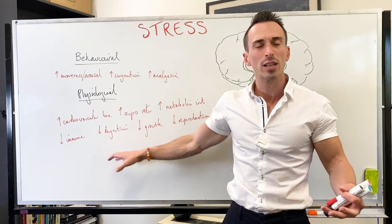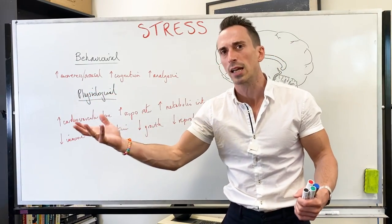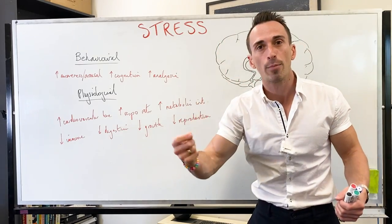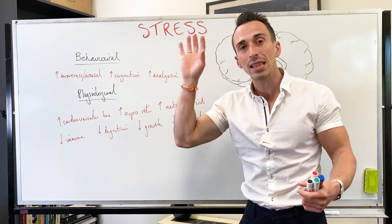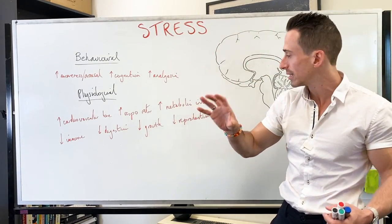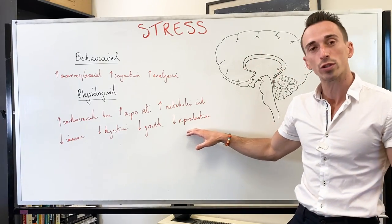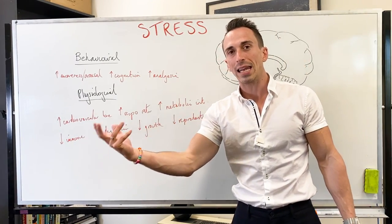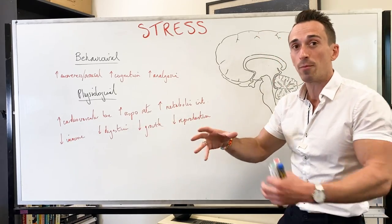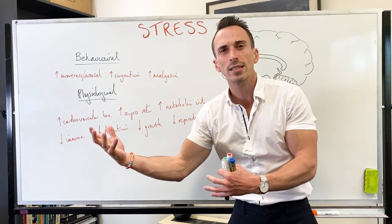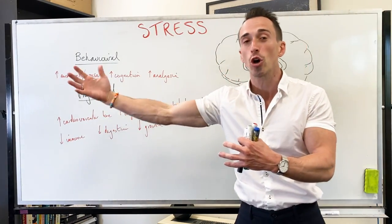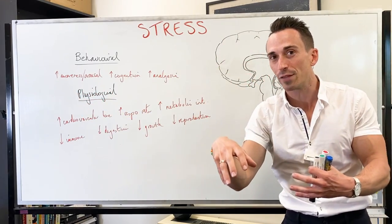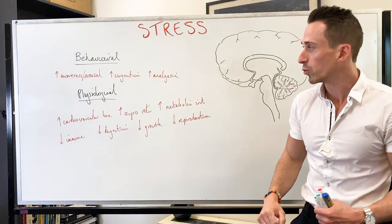We decrease digestion — this is parasympathetic, resting, the opposite to times of stress. Growth is anabolic — it's building — and in this time we're in more of a catabolic state. Reproduction is also a parasympathetic response, and it is that obvious desire to pass on to the next generation. This is a longer-term goal, but in the immediate we just want immediate survival, so this is repressed as well.